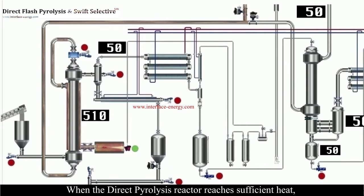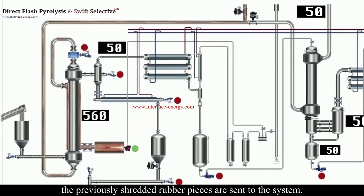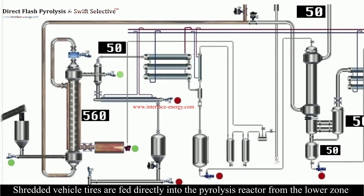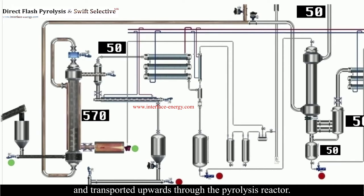When the direct pyrolysis reactor reaches sufficient heat, the previously shredded rubber pieces are sent to the system. Shredded vehicle tires are fed directly into the pyrolysis reactor from the lower zone and transported upwards through the pyrolysis reactor.